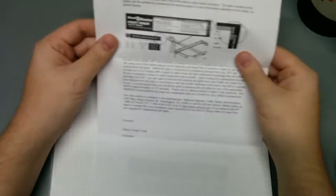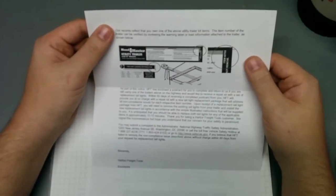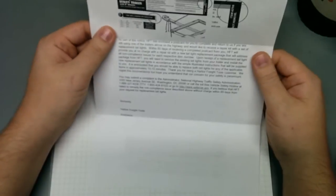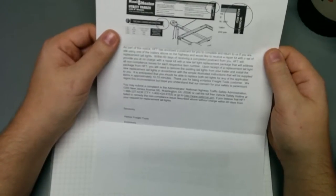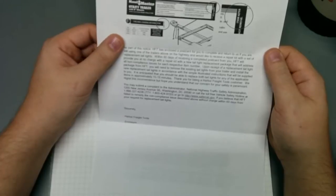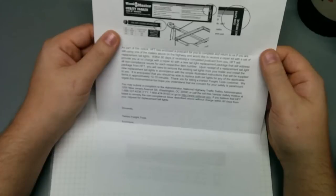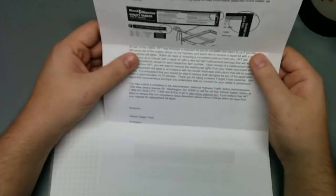So it goes on to say in this recall, our records reflect that you have one of the above utility trailer kits. And as part of this notice, Harbor Freight tools does include a postcard if you need a complete return. And if you're still using one of the trailers on the highways, then you will get a repair kit with a set of replacement taillights.